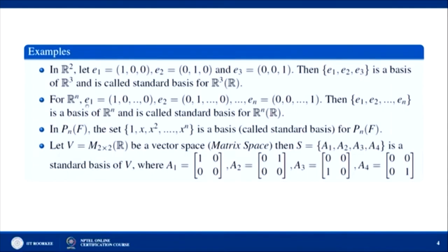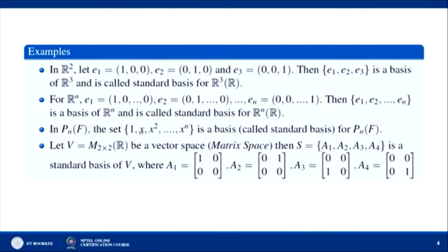Similarly, for Rⁿ, taking E₁, E₂, ..., Eₙ as standard unit vectors gives the standard basis for Rⁿ. For Pₙ, the set {1, x, x², ..., xⁿ} is a basis called the standard basis for Pₙ.